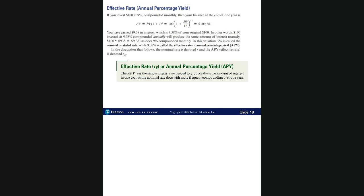The first concept is the annual percentage yield, or APY. Suppose that you invest $100 — that is your present value — and that is compounded monthly. So we have M equal to 12, the interest rate is 9%, so we use 0.09, and the time here is just 1, so T equals 1. That's why the exponent is 12 — it's 12 times 1.